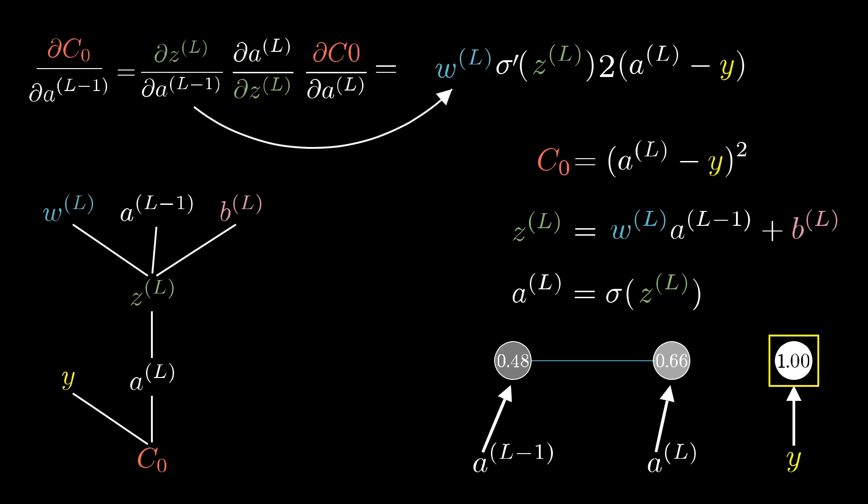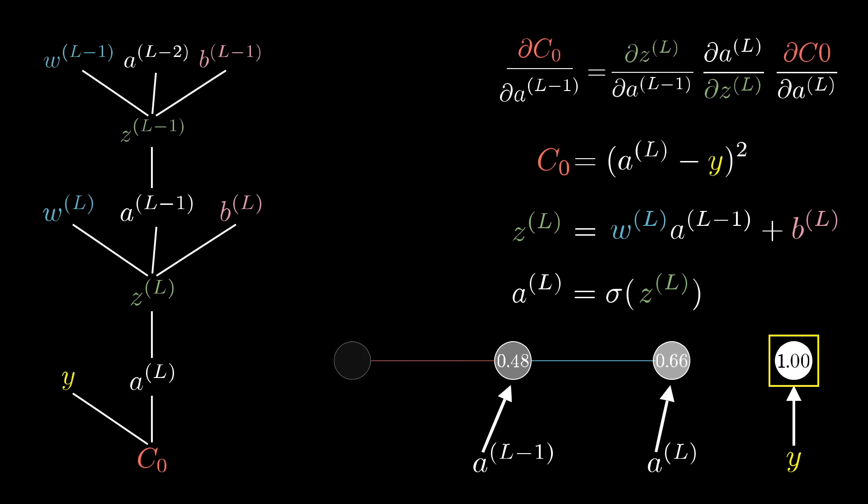And again, even though we're not going to be able to directly influence that previous layer activation, it's helpful to keep track of. Because now we can just keep iterating this same chain rule idea backwards to see how sensitive the cost function is to previous weights and previous biases.